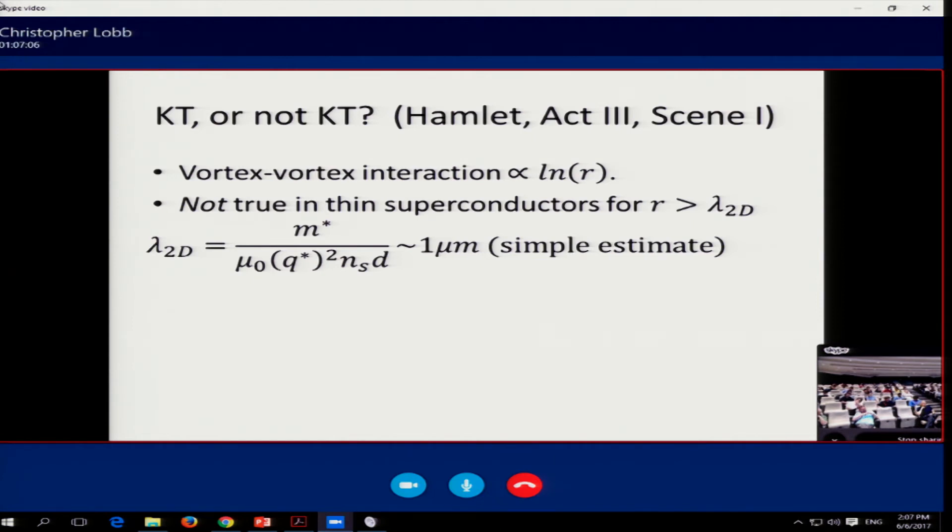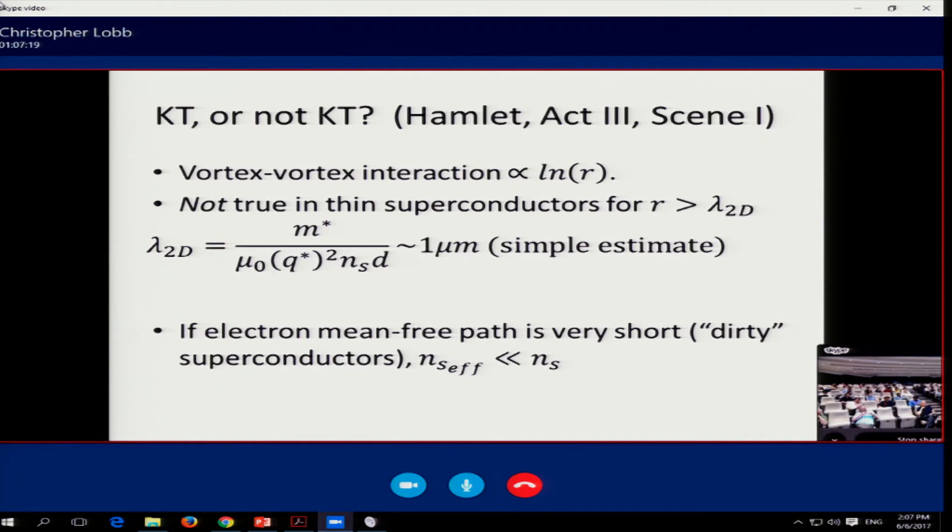And if you take a superconducting material and have the electron mean free path be short, you don't use the electron density anymore as your effective superfluid density. And I don't want to go into all the details, but the actual density of Cooper pairs is much, much less than the density of electrons above Tc. This is the so-called dirty limit. And this is the path that quite a few people exploited. It's tricky. But if you make a dirty superconductor, one that has a short mean free path, and if you make it uniform, then you can actually observe the Kosterlitz-Thouless transition. It's possible to get this 2D penetration depth up to the size of centimeters.